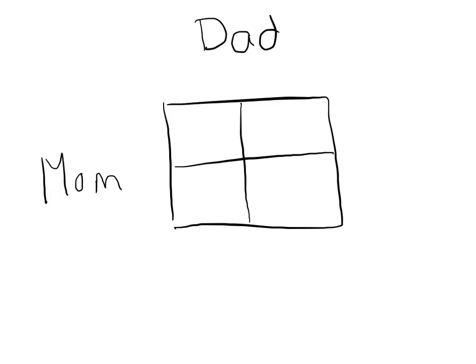So let's pretend that we're looking at tongue rolling. We already know there are two alleles for tongue rolling: big R and little r. If you have a big R you're a tongue roller, and two little r's would be a non-tongue roller. Let's pretend that our mom has a genotype of big R, little r, and our dad also has that genotype, big R, little r.